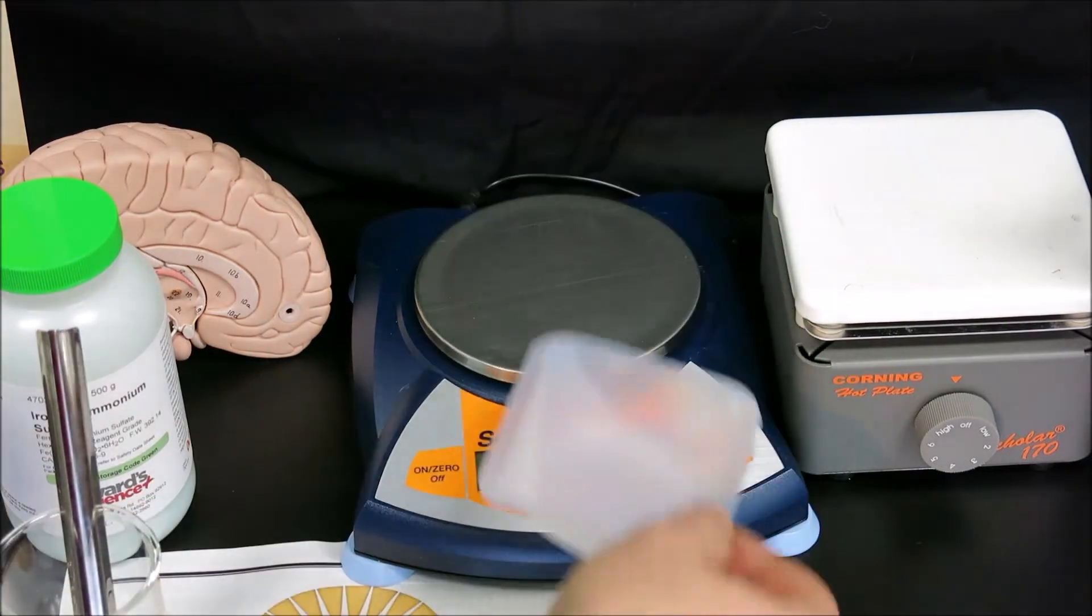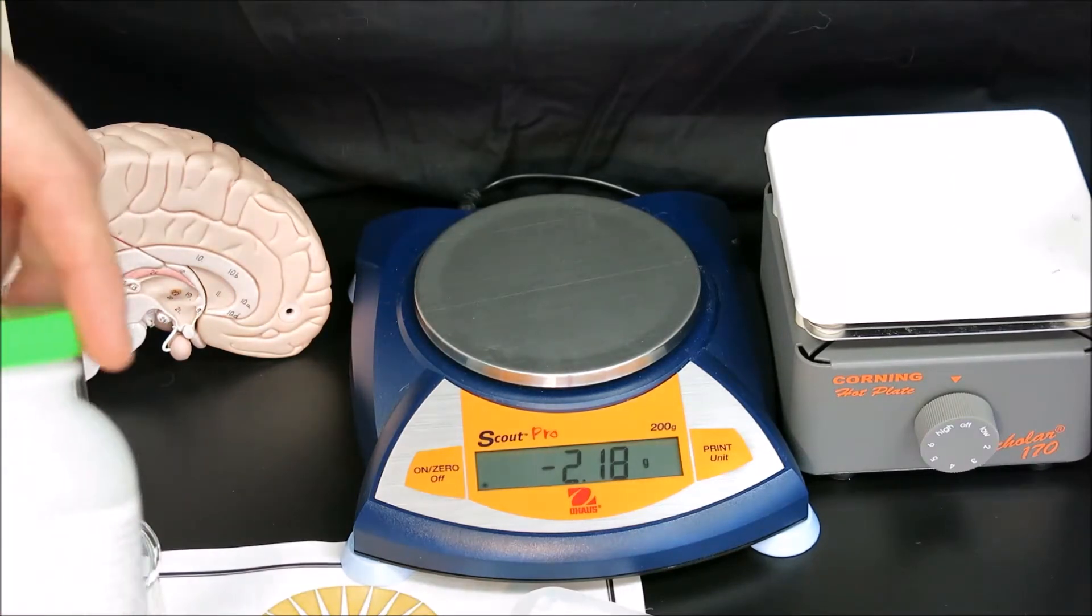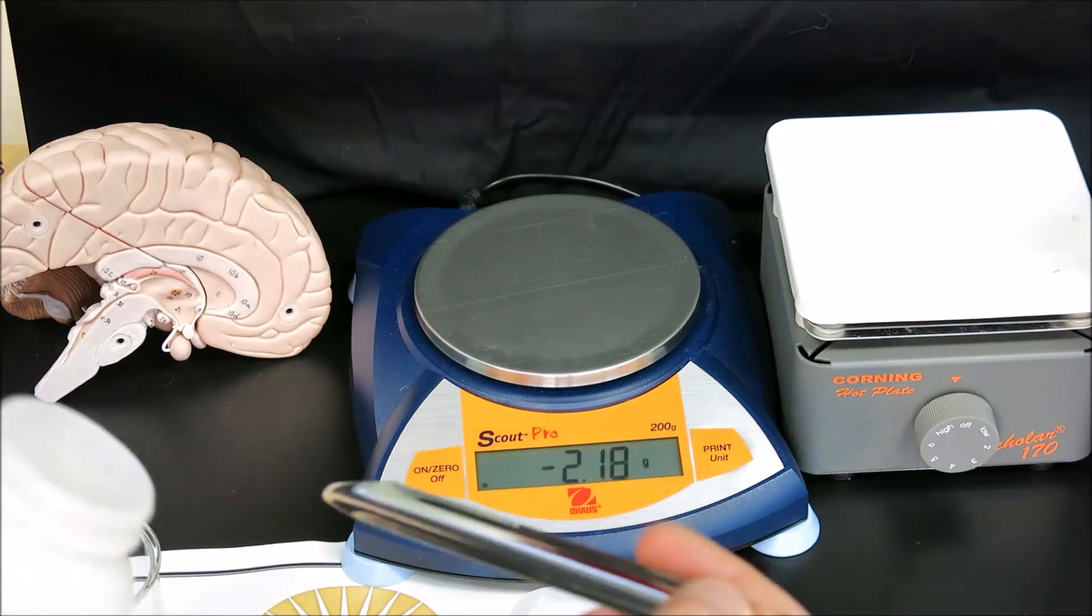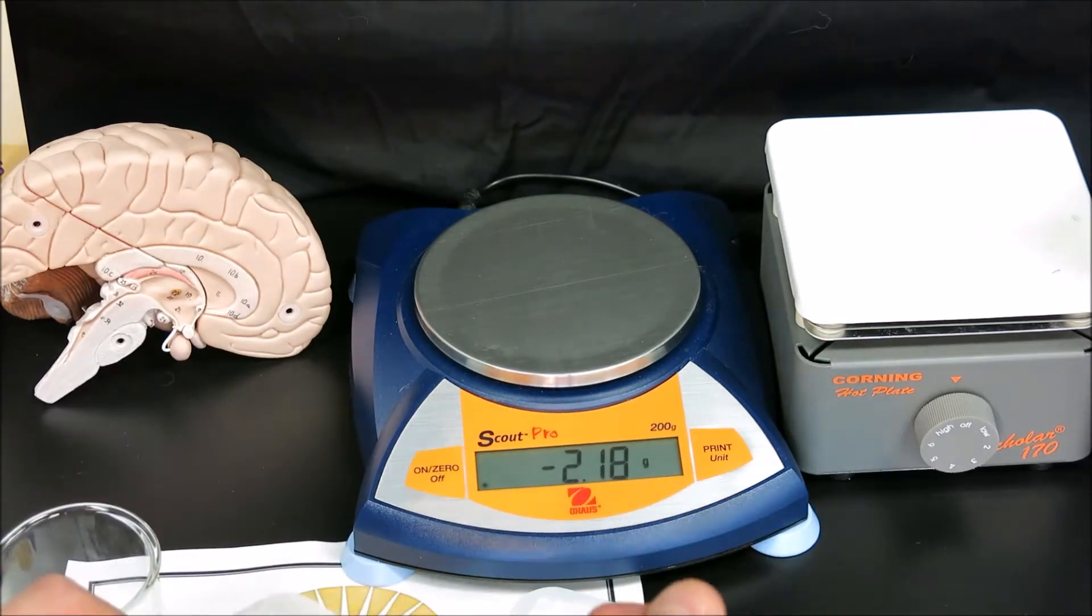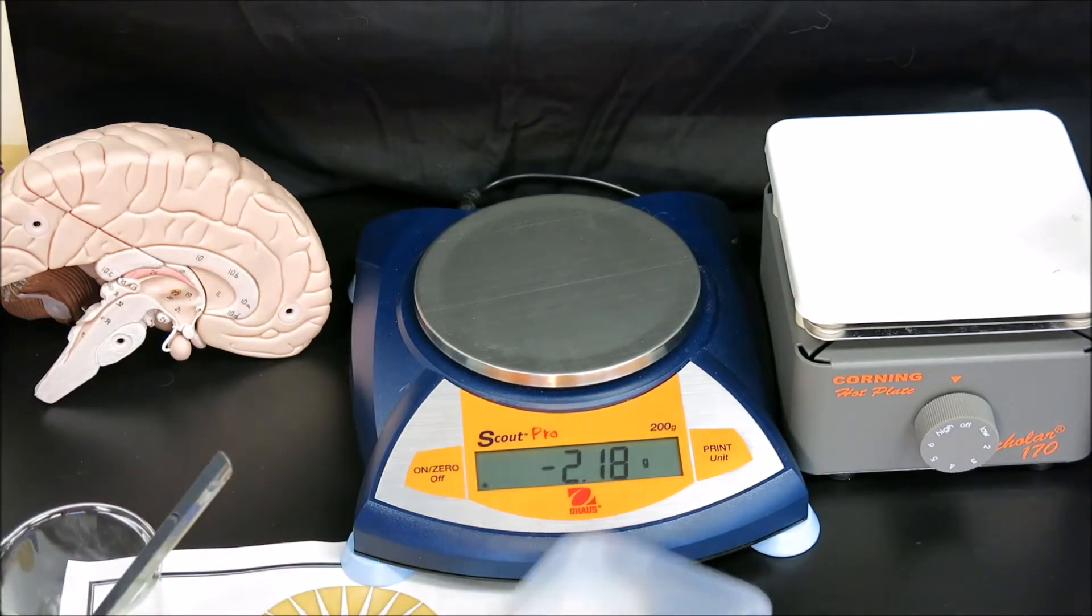We never want to pour solid on the scale because if we miss, the chemical could damage the scale. Instead, we take the weigh boat off the scale, and using the spatula, pour some solid into the weigh boat, then put the weigh boat back on the scale to test the mass.